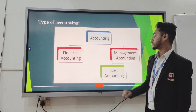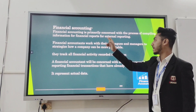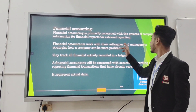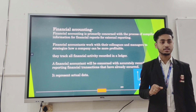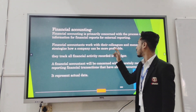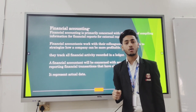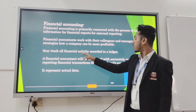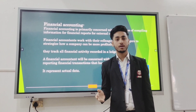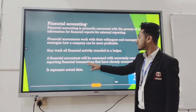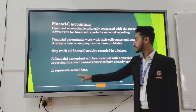There are three types of accounting: financial accounting, managerial accounting, and cost accounting. Financial accounting is primarily concerned with the compiling of accounting records. Financial accountants work with colleagues and managers to strategize how the company can be profitable. They track all financial activity records in a ledger — how goods came in and all financial matters. Financial accounting is concerned with accurately recording and reporting financial transactions that have already occurred, based on actual data.